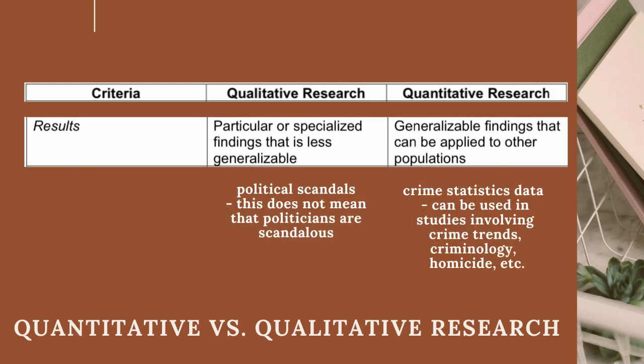Results: Results in qualitative research are particular or specialized findings that are less generalizable. For example, political scandals — but this does not mean that all politicians are scandalous. Results in quantitative research are generalizable findings that can be applied to other populations. For example, crime statistics data can be used in studies involving crime trends, criminology, homicide, and many more.